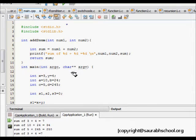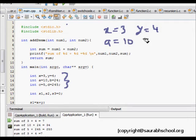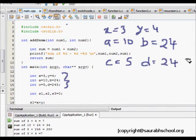We will take an example. Let's say we have three sets of numbers. So first is x equals 3, y equals 4. So this is the first set of two numbers. Next, a equals 10 and b equals 24. Then the last set is c equals 5 and d equals 245. So we have these three sets of numbers consisting of two numbers.